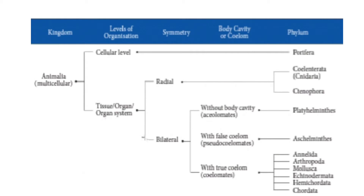The animal kingdom is subdivided by cellular level and tissue level. Porifera is at the cellular level. At the tissue level, we have the radial level and bilateral level. In the radial level, you have two phyla: Coelenterata and Ctenophora.